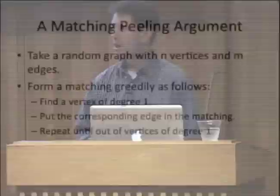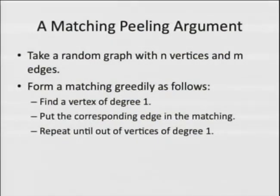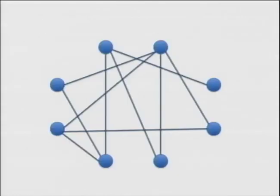Let's start with one of the very basic peeling arguments. We have a graph and we'd like to find a matching, usually in the context of a random graph. You can use the following peeling approach: find a vertex of degree one — there's just one edge out of it — and throw it into the matching with the other vertex on that edge and repeat. You can prove pretty easily that this is an optimal strategy in the sense that there's a maximal matching where those edges are involved.